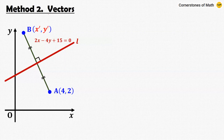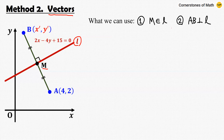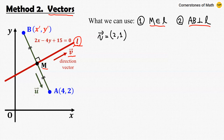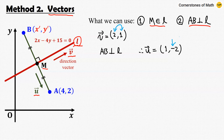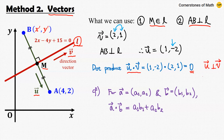Now let's move on to the second method — the vector method. Similarly, let M be the midpoint of line segment AB, which lies on line L. Throughout the solution we use the same two conditions: point M is on line L, and lines AB and L are perpendicular. For a given line L, there exists the direction vector V. From the slope of the line, we know that vector V equals (2, 1). Since AB and L are perpendicular, the direction vector U of line AB is (1, minus 2) — we switch the coordinates of V and assign a minus sign so the dot product equals 0, confirming perpendicularity.